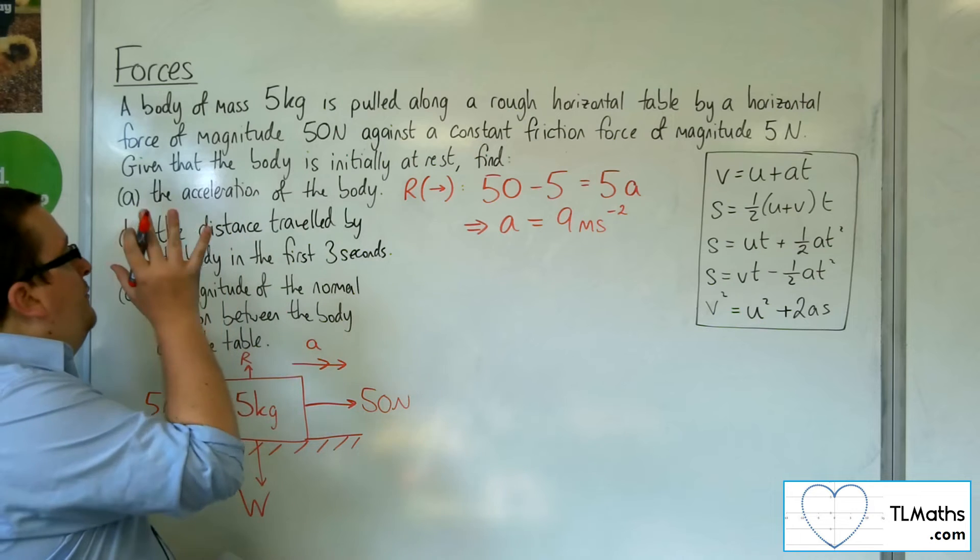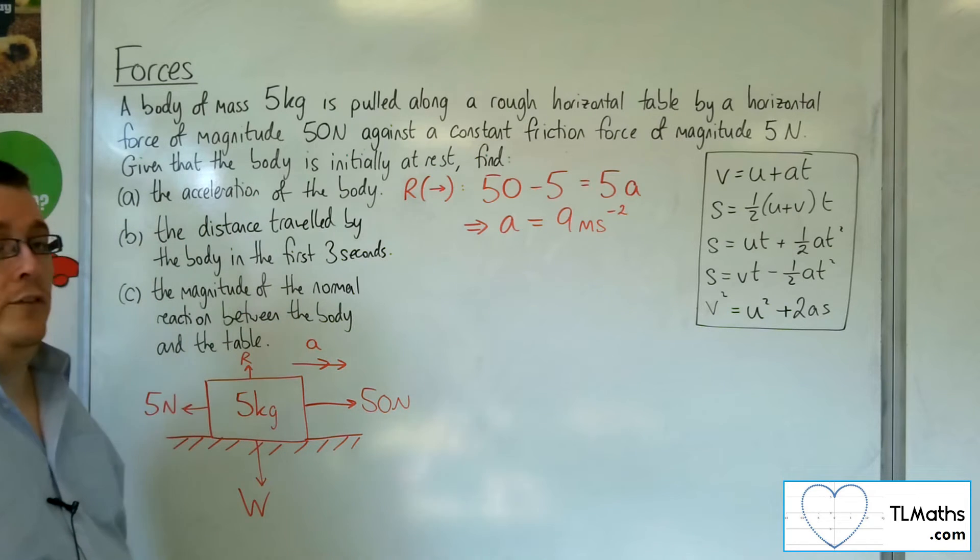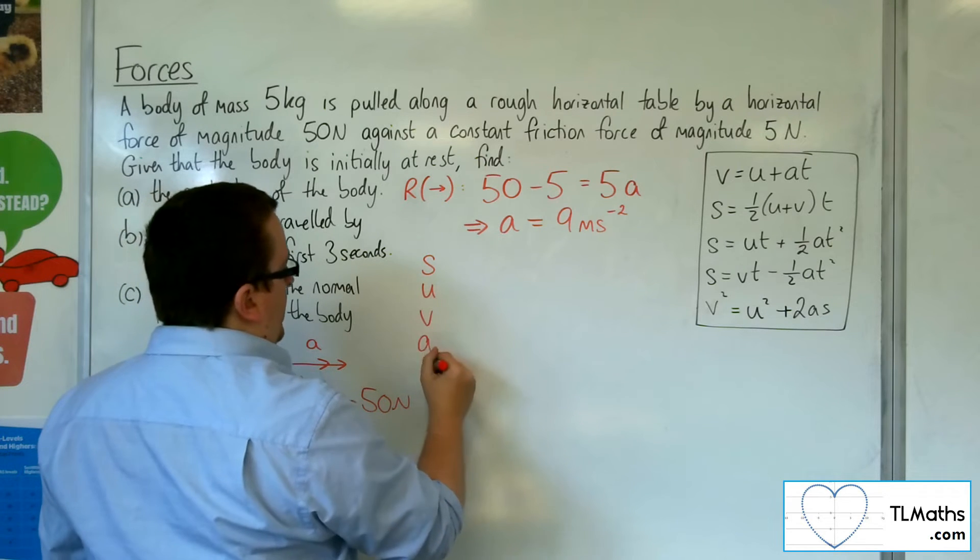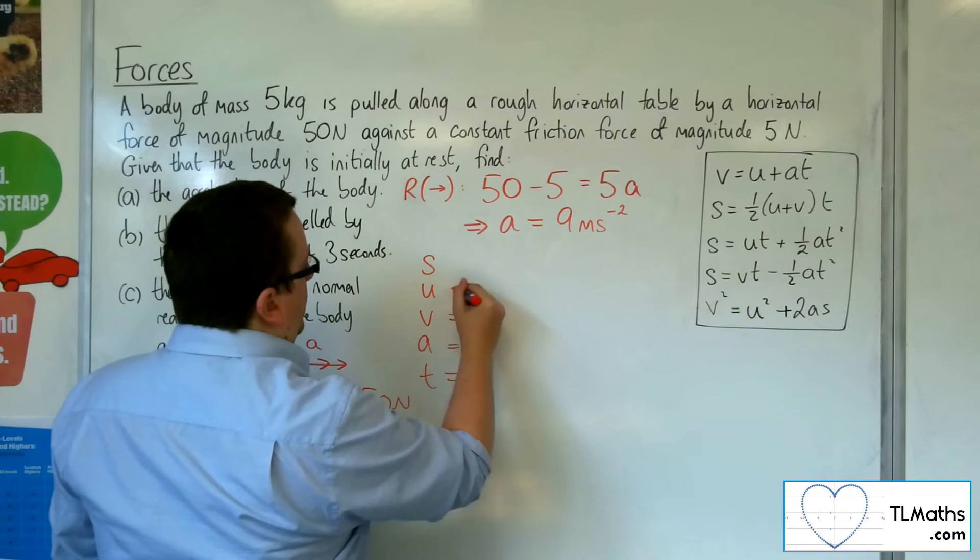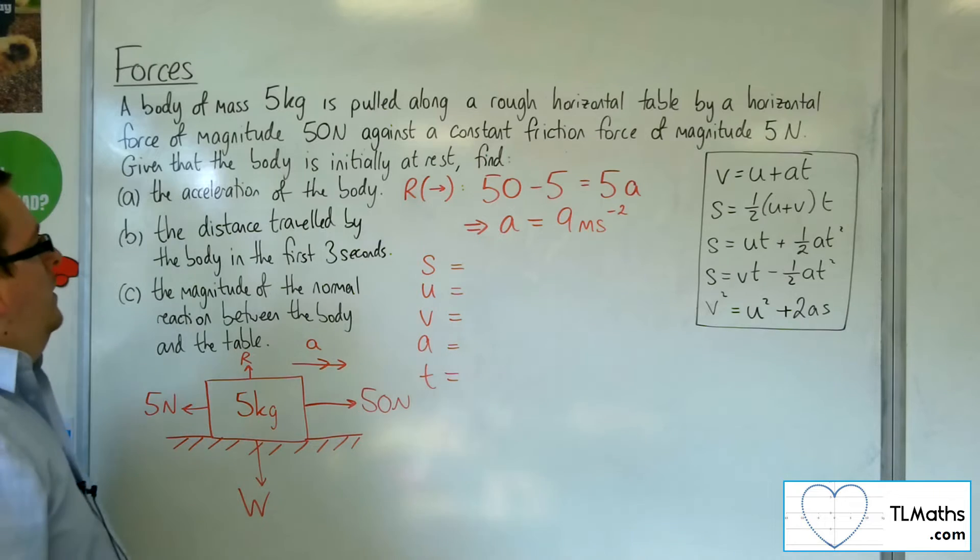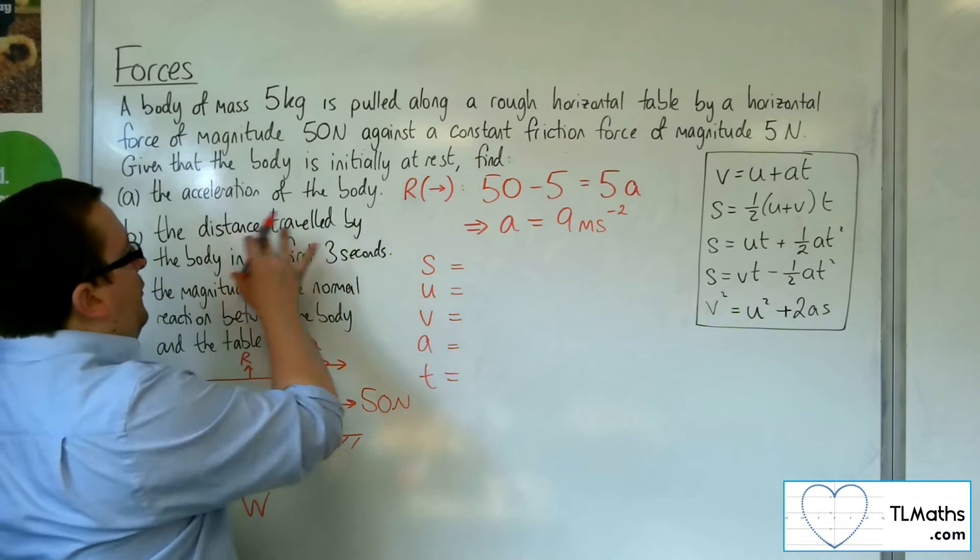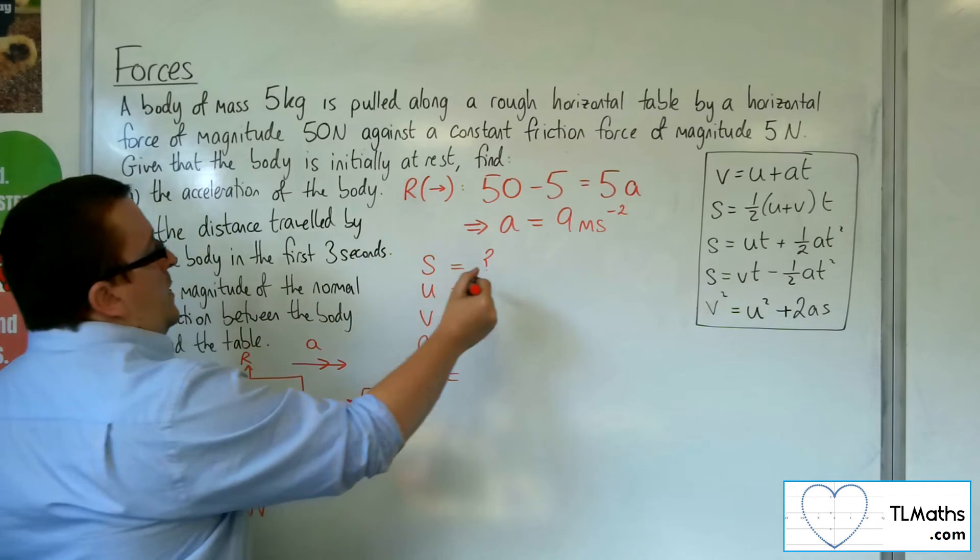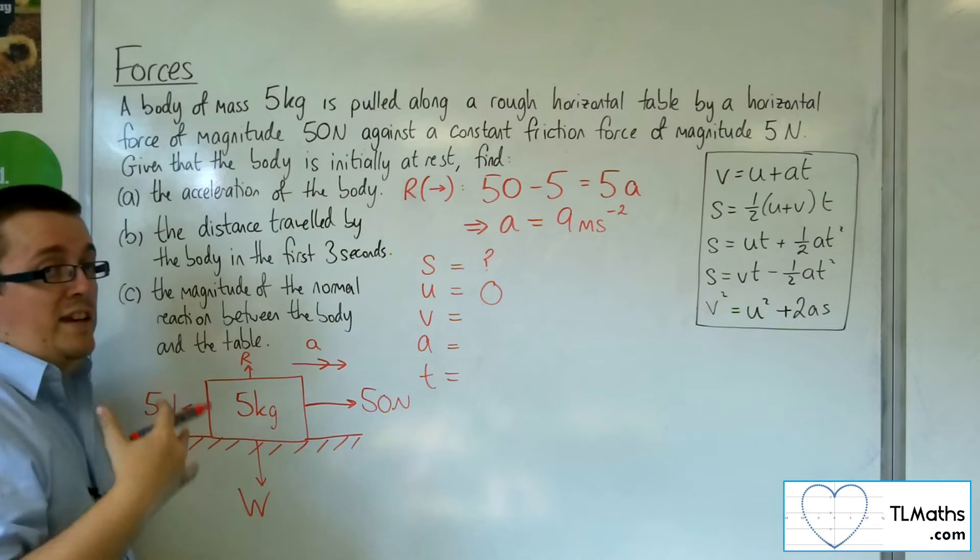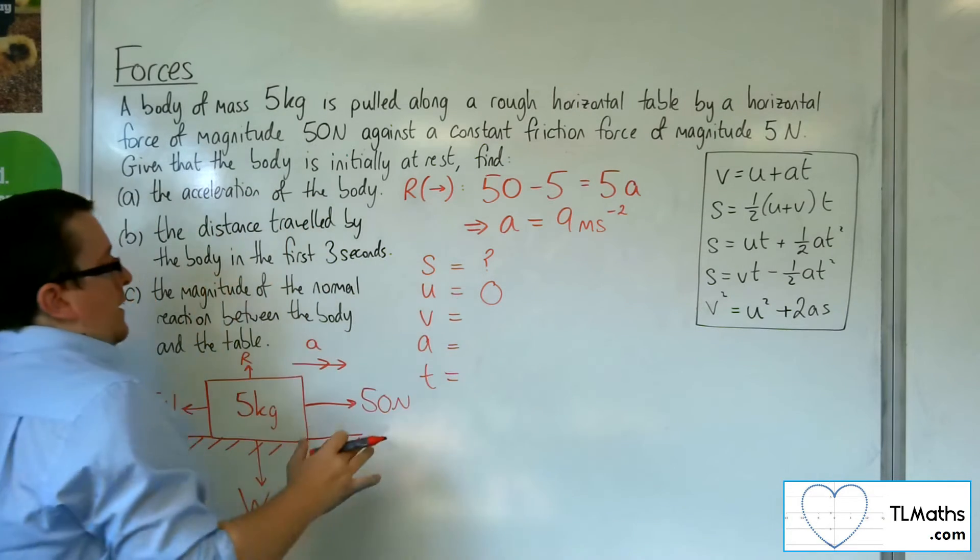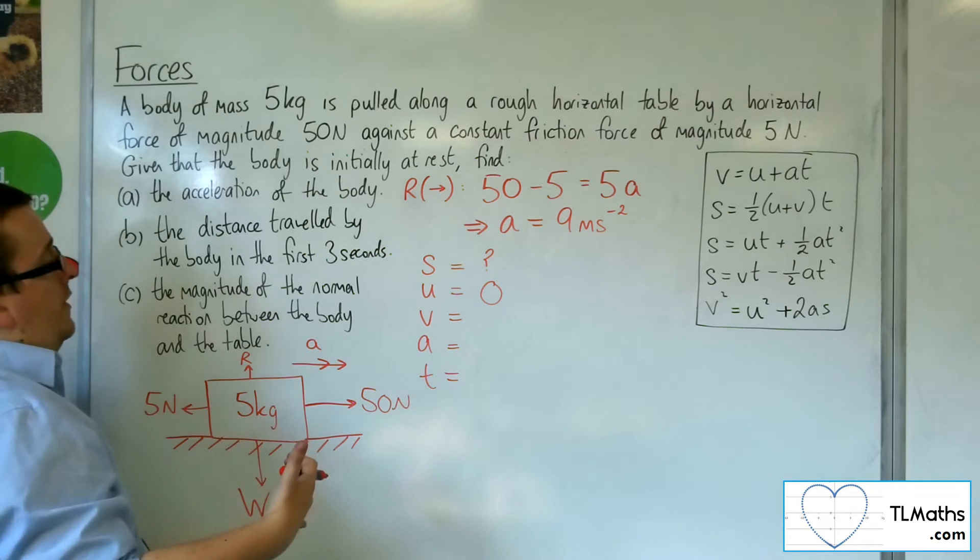Now the next part asks us to find the distance travelled by the body in the first three seconds. The moment distance is mentioned, it brings in the SUVAT equations. So the constant acceleration formulas that I've got here is what we now need to use. So we want to find that distance. We know U is 0 because the body's initially at rest. We don't know the final velocity and we're not asked to find it.